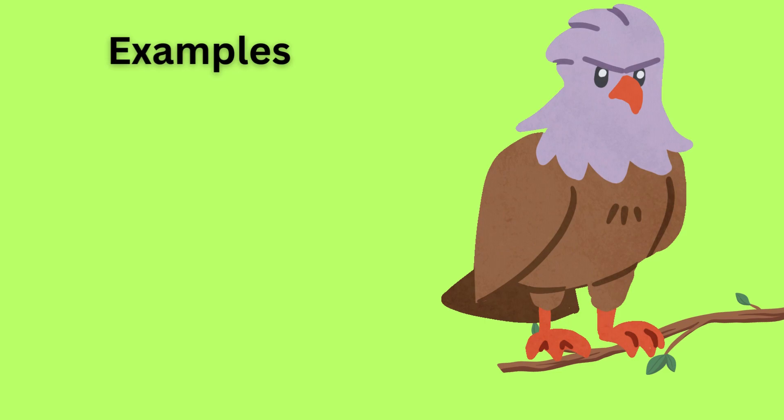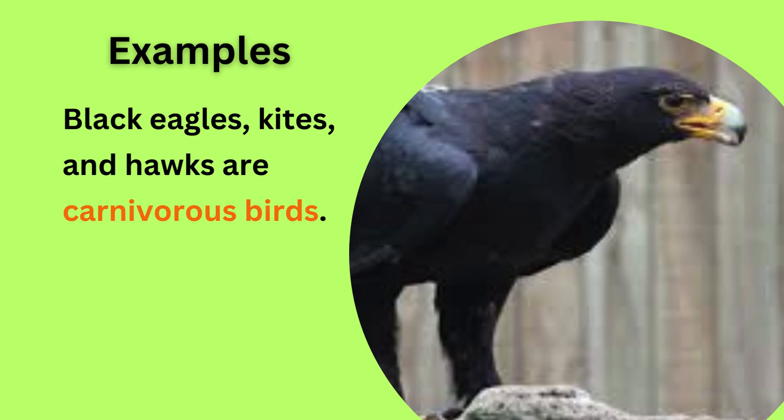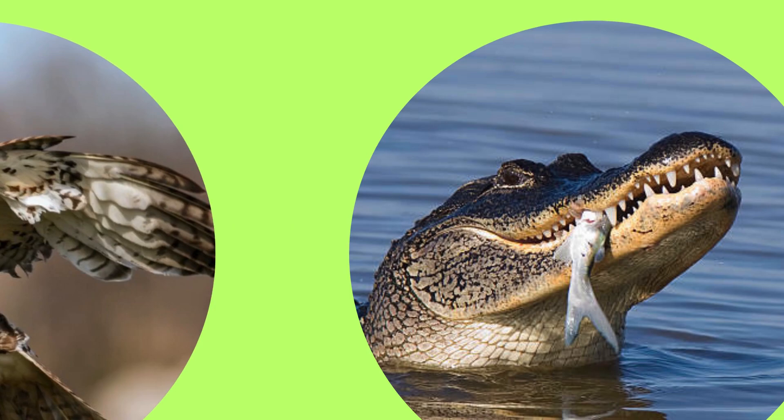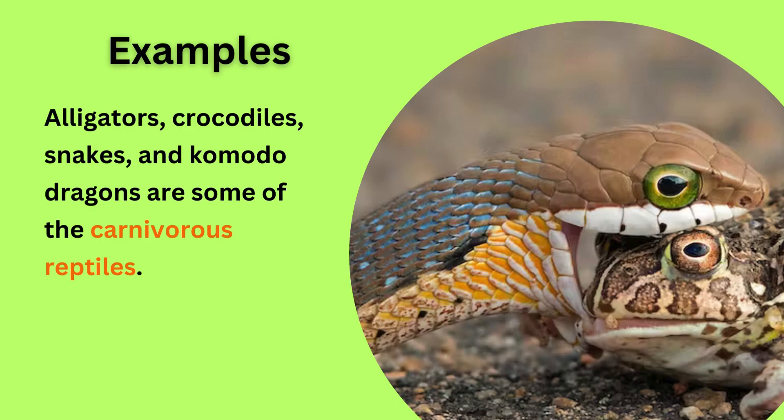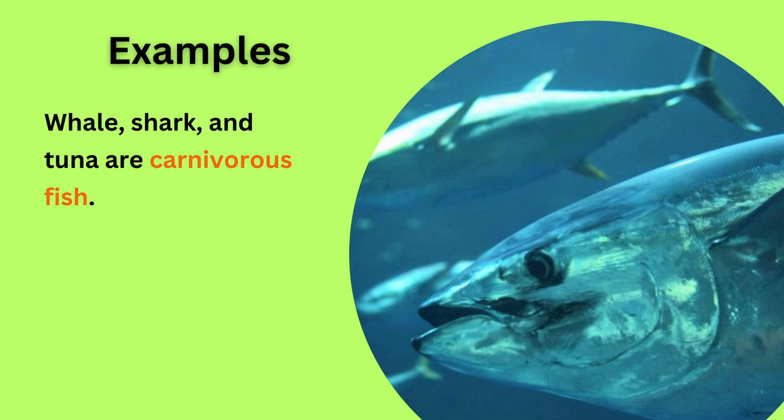Some common examples of carnivorous animals are lions, wolves, tigers, and cheetahs. Black eagles, kites, and hawks are carnivorous birds. Alligators, crocodiles, snakes, and komodo dragons are some of the carnivorous reptiles. Whale, shark, and tuna are carnivorous fish.